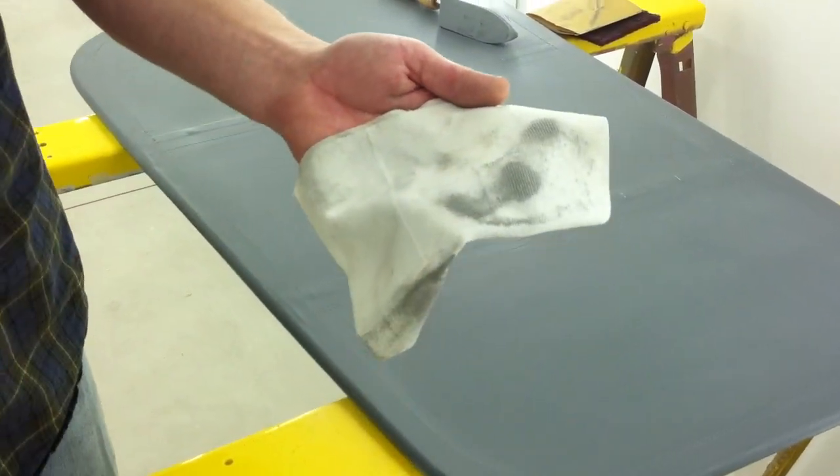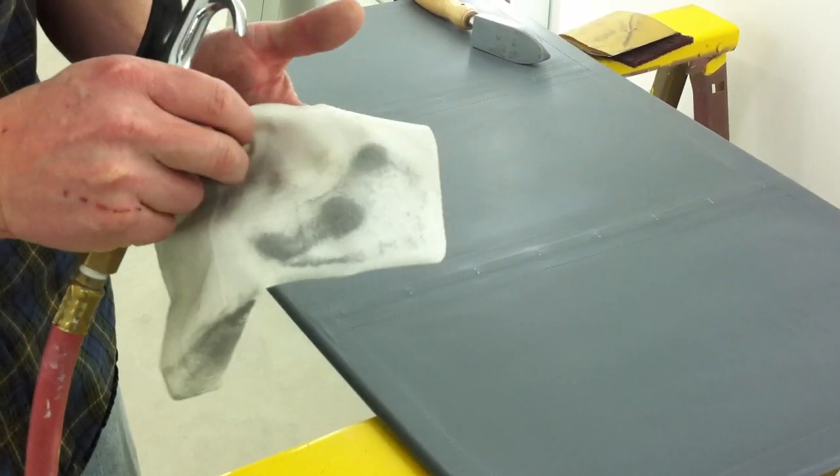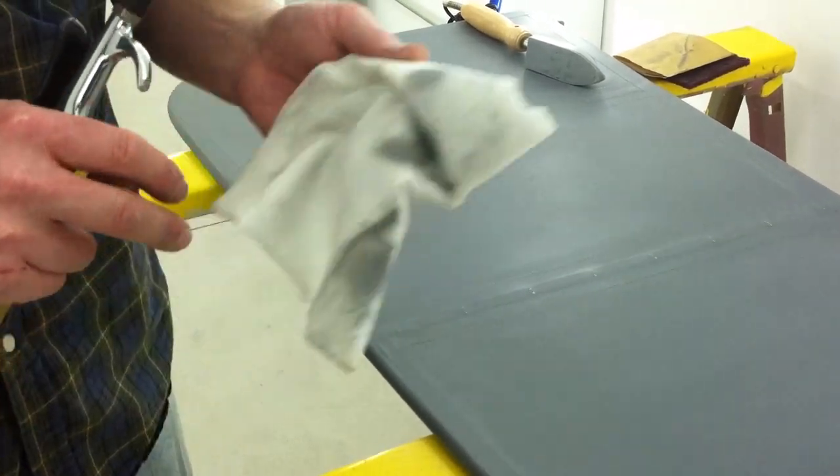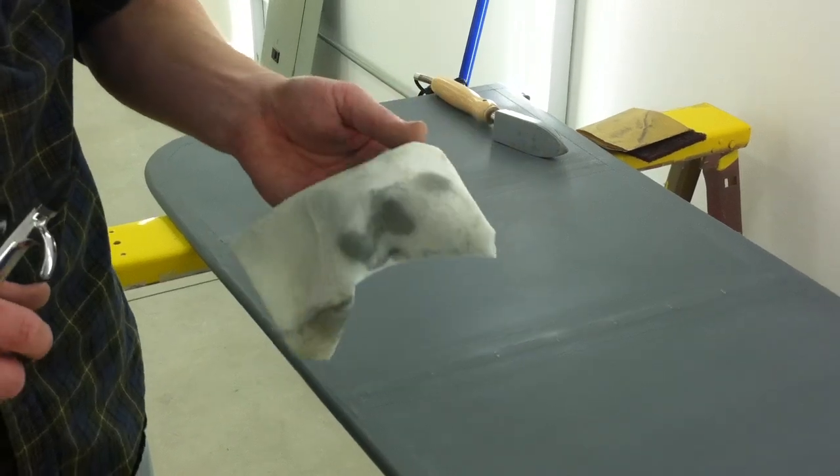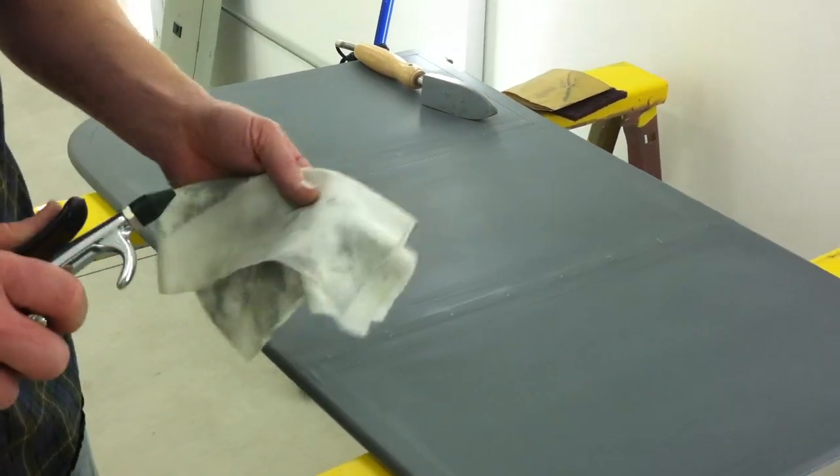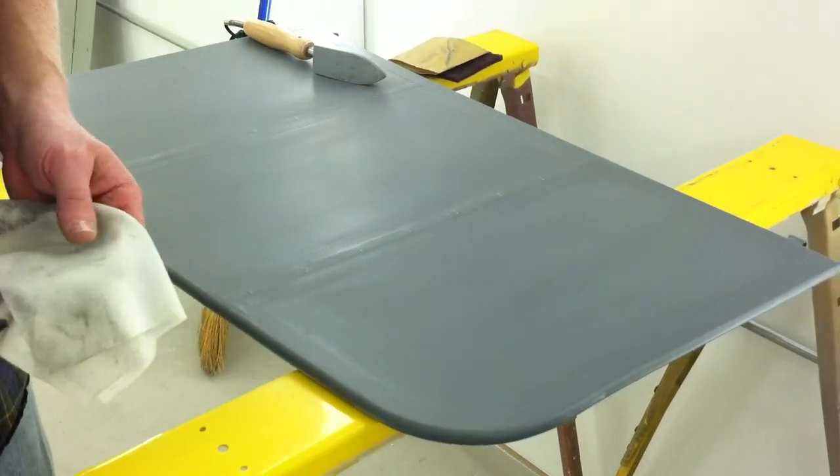If you cannot find or do not have an outlet for the waterborne tack rags designed for waterborne products, you can give us a call at the factory and we'll send some to you. Very important to blow and wipe the dust off between coats so that you don't have an issue with separation between layers.